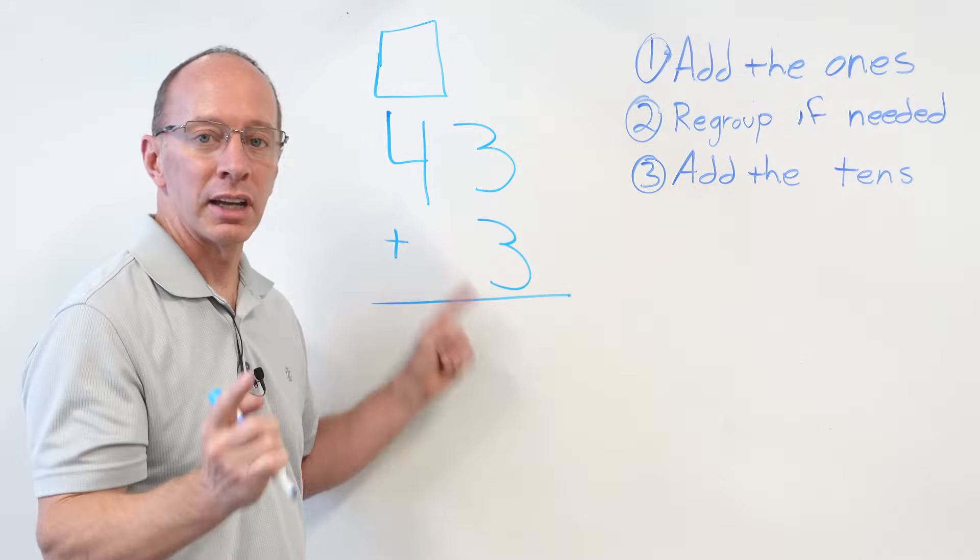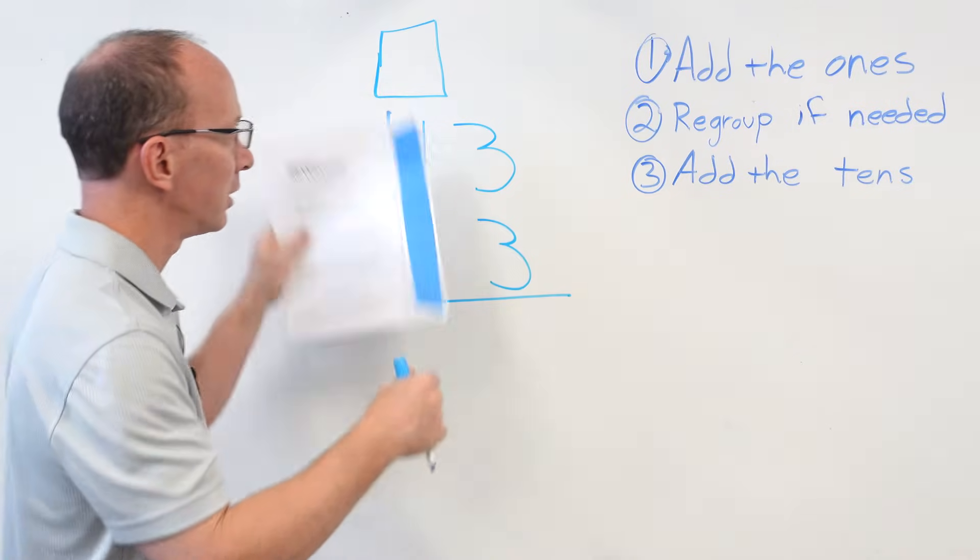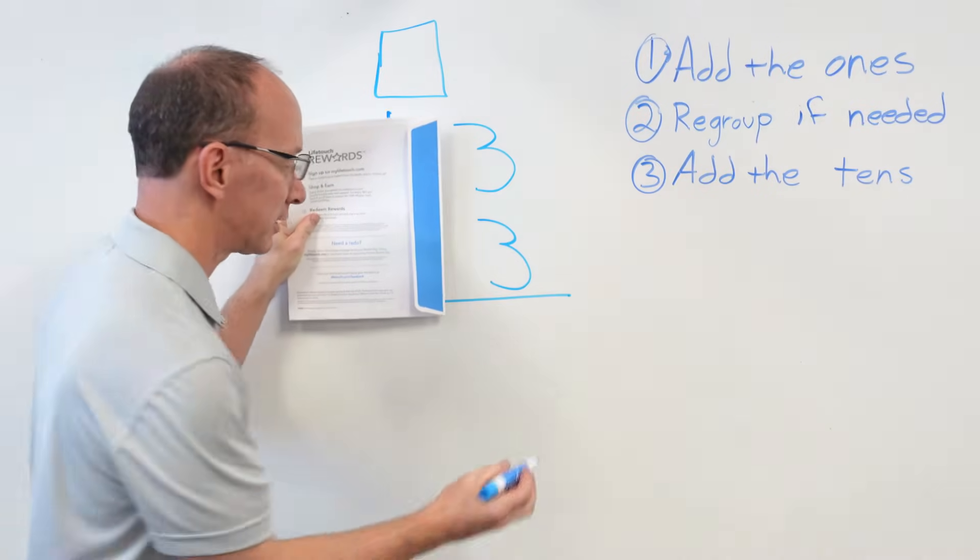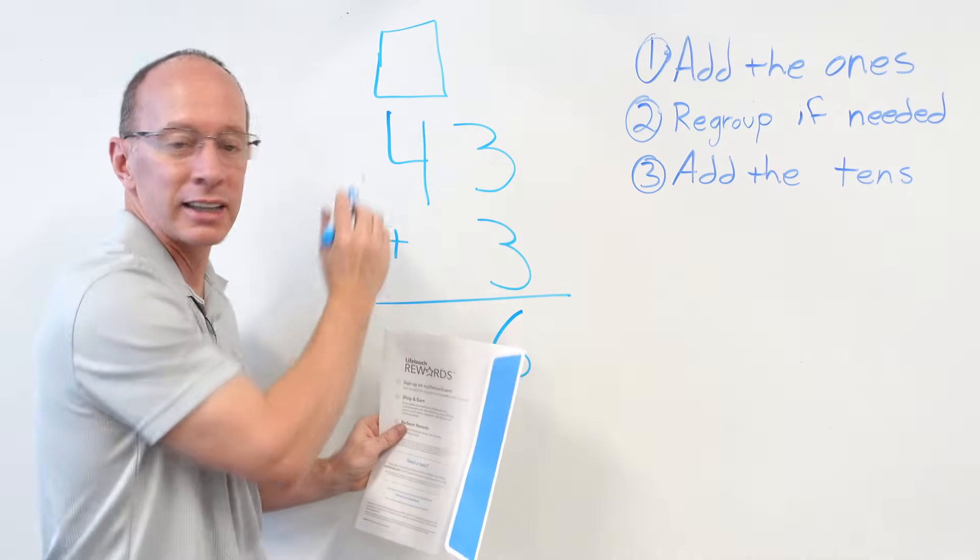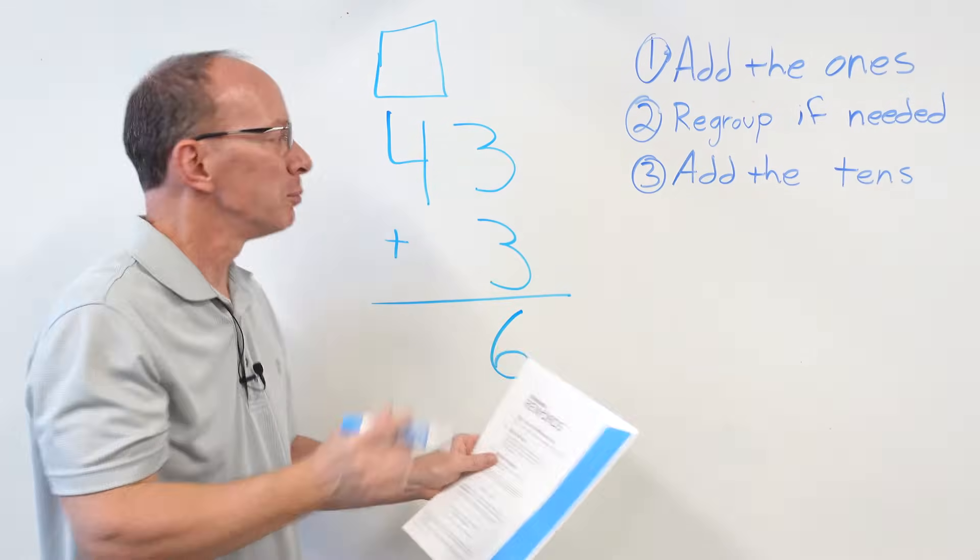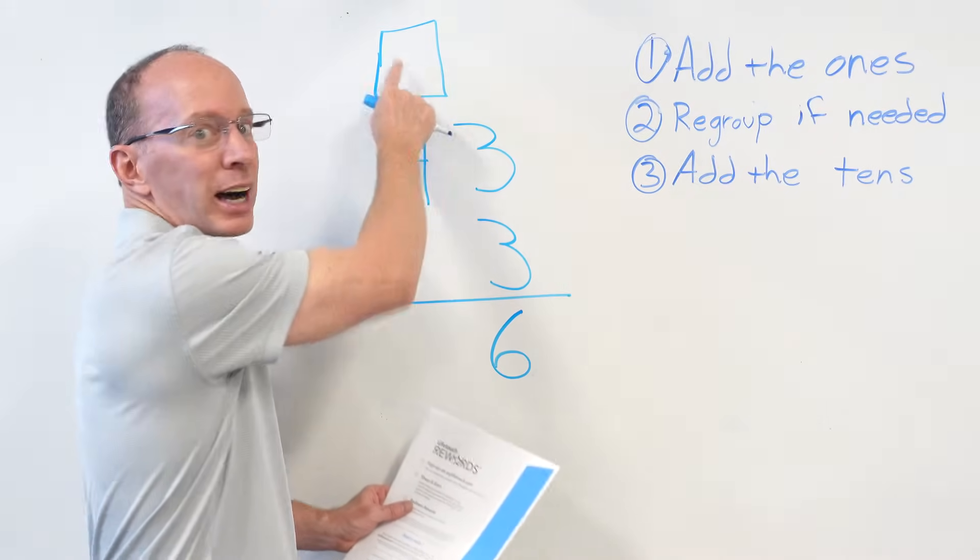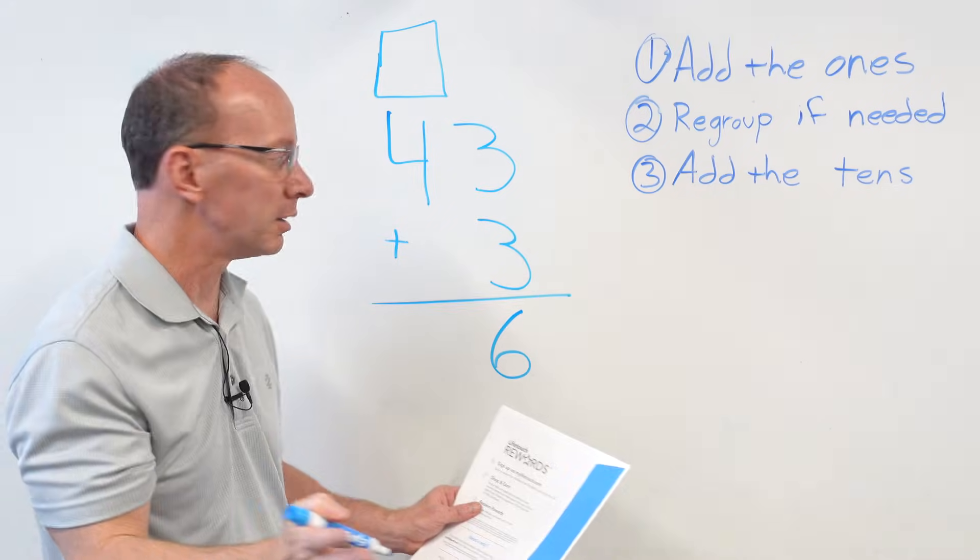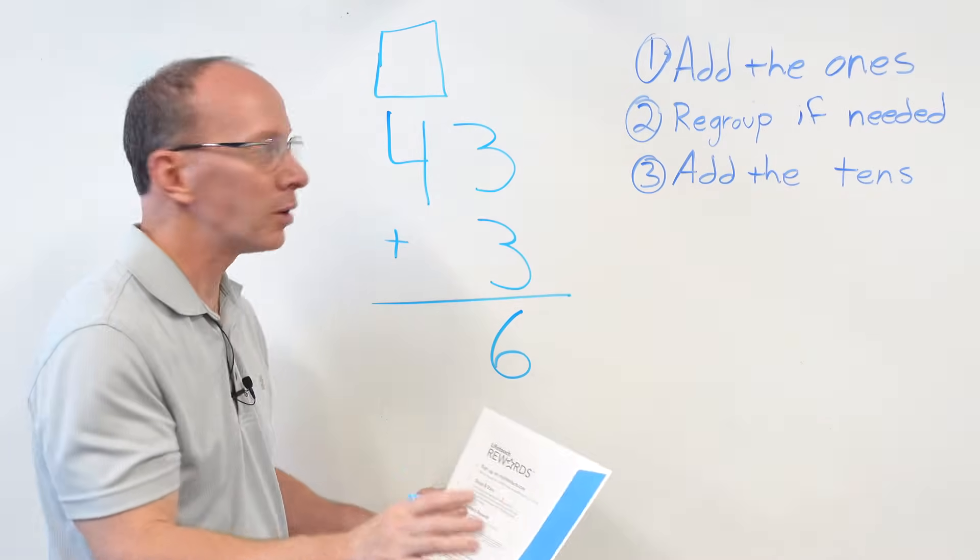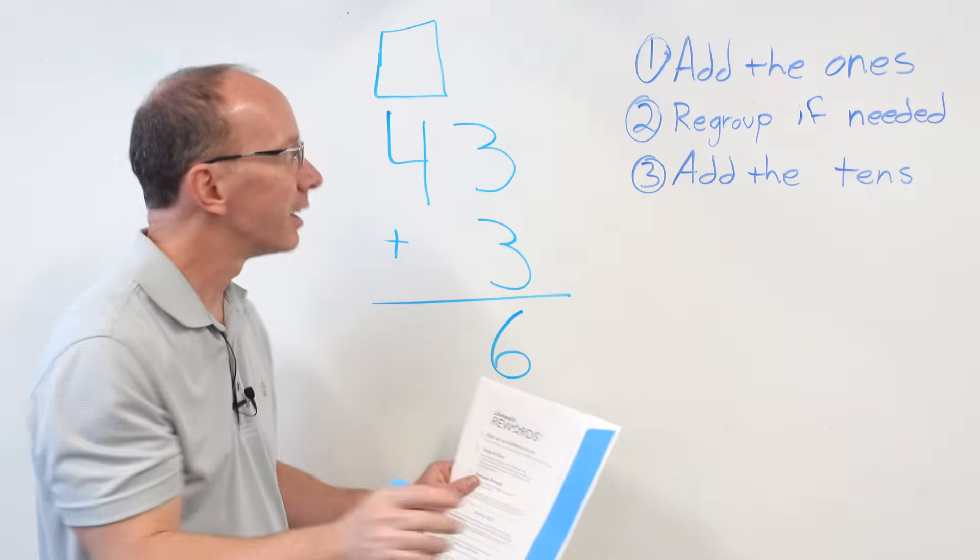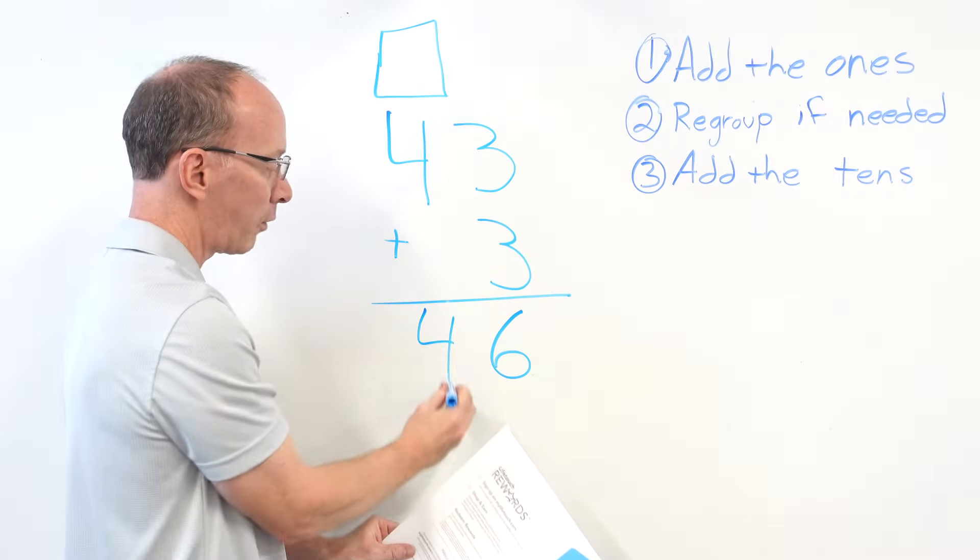Okay, right now I have 43 plus 3. So first of all, add the 1s. If you want to, you can cover this up. 3 plus 3 equals 6. No, you don't need to put anything in that box. I know it looks like you want to put a number in there, but don't put it in there. It's not 16. They're trying to trick you sometimes to think like, yeah, if I have a box, I always need to put a number in there. No, you don't need to. 3 plus 3 equals 6. That's it. Don't do any more. Do I need to regroup? No. Add the 10s. 4 plus 0 equals 4.